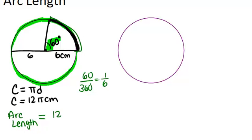The full circumference, 12 pi, times one-sixth, which is the fraction of the whole circle that that arc is. And that gives us 2 pi centimeters. The units for arc length will be centimeters because it's just a length. It's a one-dimensional measurement. So, the arc length for this particular arc is 2 pi centimeters.